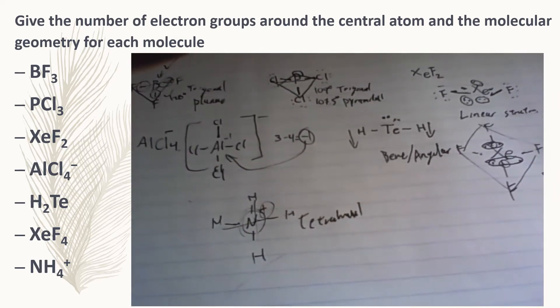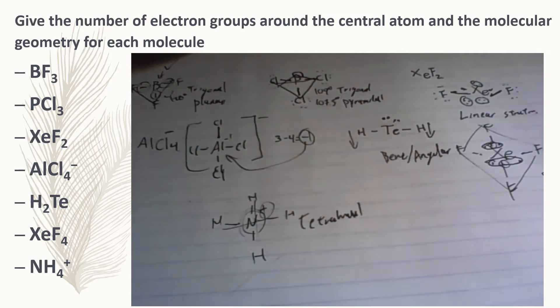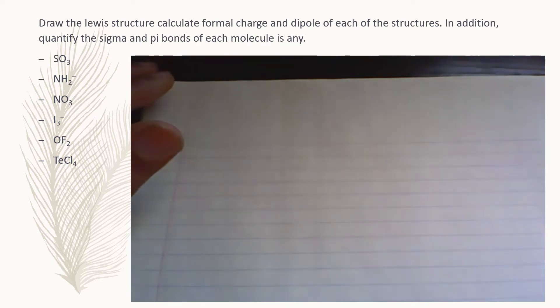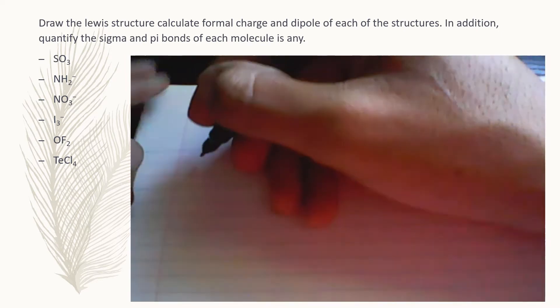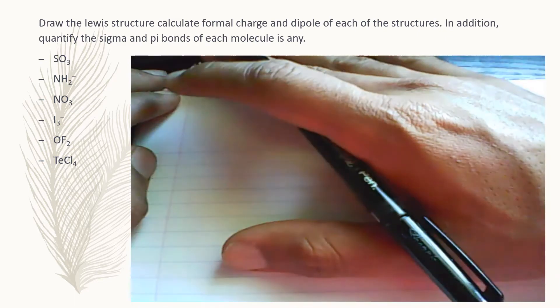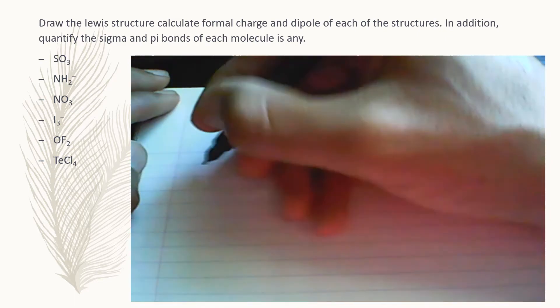Hopefully you got the same answers and were able to follow along. Now we're going to move on to slightly more difficult Lewis dot structures where we'll quantify the pi bonds and formal charge. First, put pause, try to make it on your own, and once you finish, compare the answers.